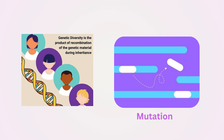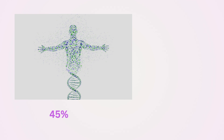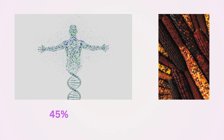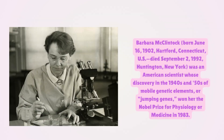Transposons can also cause mutations if they are inserted into a regulatory gene. They are not unique to humans but are found in almost all living organisms. For example, around 45 percent of human DNA is made up of transposons, whereas in maize — also known as corn — it's about 85 percent, showing how important and widespread these jumping genes are.